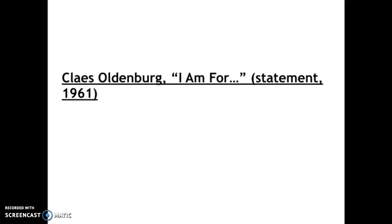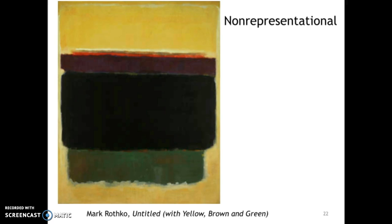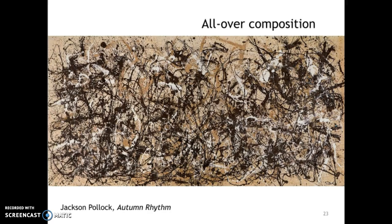Abstract expressionists were individual artists working in individual modes — they were expressing themselves — but there are certain characteristics of their artwork that connect the artists. One of these characteristics is that abstract expressionist art is non-representational, so it does not depict any readily recognizable imagery. Another characteristic is that it features an all-over composition. In Jackson Pollock's Autumn Rhythm, you'll notice that it's chaotic; there's really no place for your eye to rest — it's constantly moving throughout the composition.